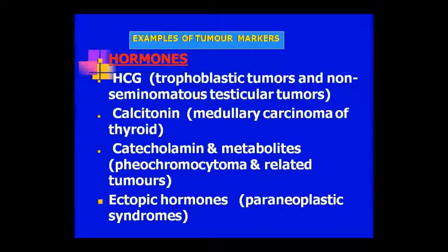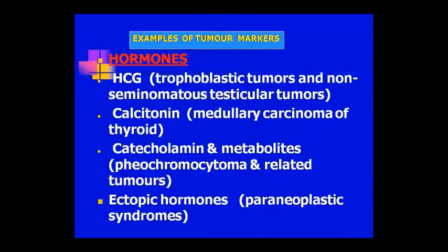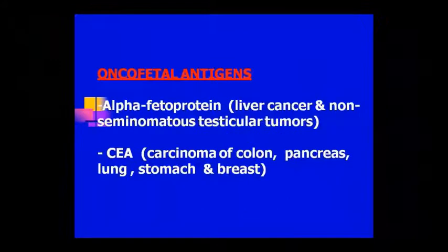When we talk about tumor markers, we detect hormones like HCG, calcitonin, catecholamines, and ectopic hormones. We detect tumour and non-metastatic tumors. Pheochromocytoma is detected by catecholamines — we observe catecholamines and other metabolites. And ectopic hormones, like the paraneoplastic syndrome which I have studied in cancer, we detect these hormones as tumor markers to detect cancer.